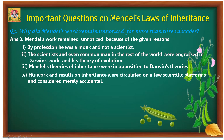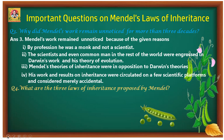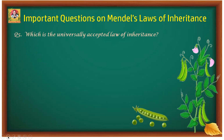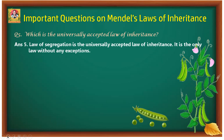Moreover, Mendel's theory of inheritance was in opposition to Darwin's theory. Fourthly, his work and results on inheritance were circulated on only a few scientific platforms and considered merely accidental. Fourth question: the three laws of inheritance proposed by Mendel are the law of dominance, law of segregation, and law of independent assortment. Fifth question: the universally accepted law of inheritance is the law of segregation, because it is the only law without any exception.